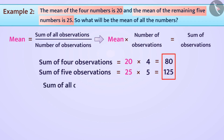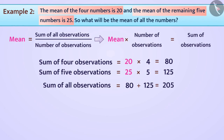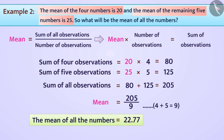Therefore, the sum of all 9 observations will be 80 + 125 = 205. Now, the mean is derived as sum of all observations divided by number of observations: 205 divided by 9 is equal to 22.77.